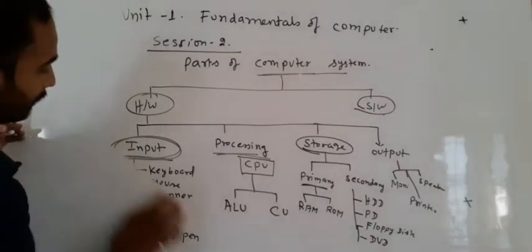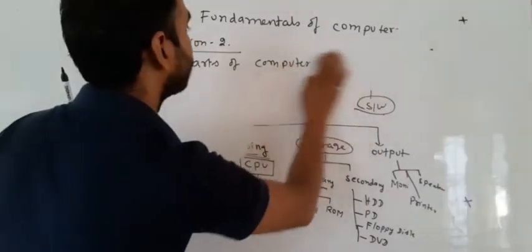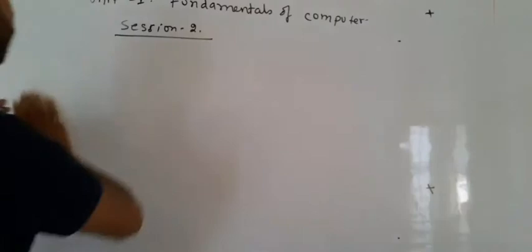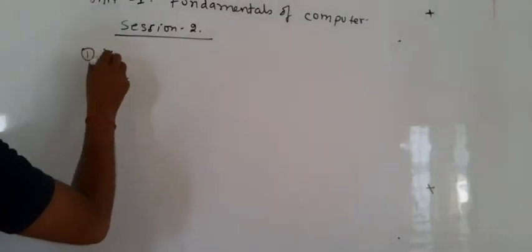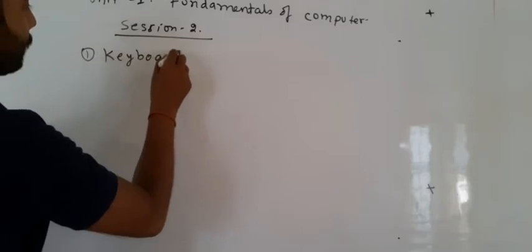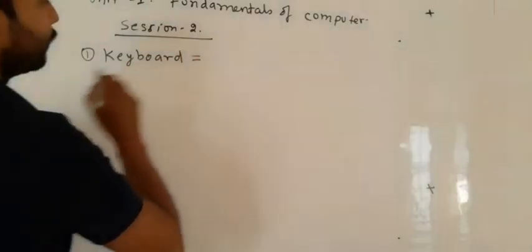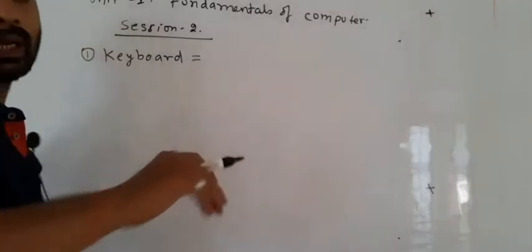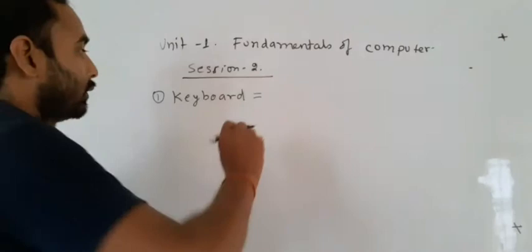Now, in input devices, keyboard is the most common example. Keyboard is the most common input device. Who invented the keyboard, the data is still not available. But Sir Christopher Latham Sholes was the first person who arranged the keyboard letters in QWERTY form.